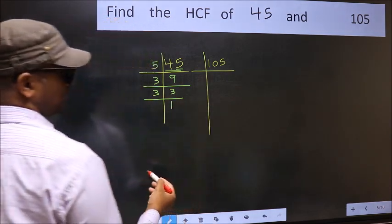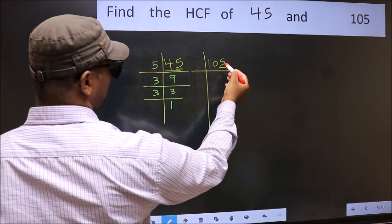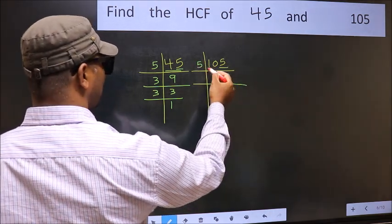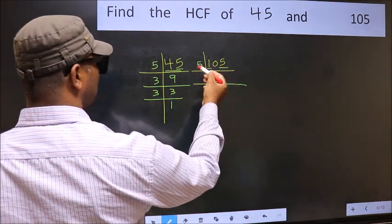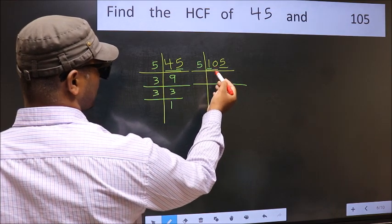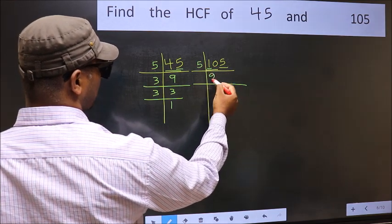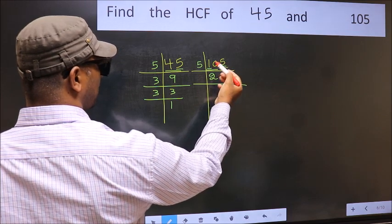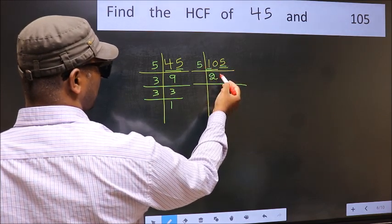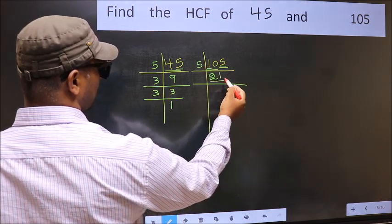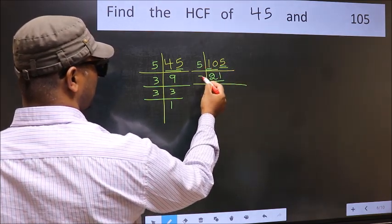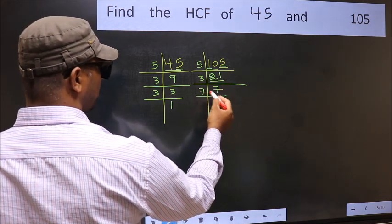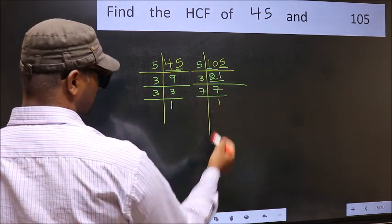Now for 105, the last digit is 5, so take 5. 5 times 21 is 105. When do we get 21? 3 times 7 is 21. And 7 is a prime number, so 7 times 1 is 7. So 105 = 5 × 3 × 7.